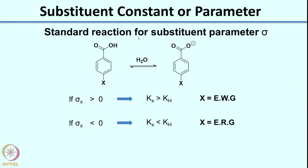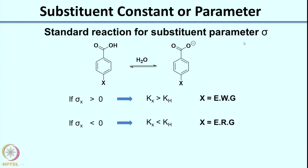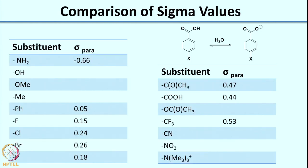If you look at any textbook on physical organic chemistry, you would find tables which give you the value of sigma for multiple substituents. These values are obtained for this benzoic acid reaction — this is the standard reaction for obtaining the substituent parameter sigma, not any other reaction. Let us now look at the magnitude of some of these values so that you get a feel for how these sigma values vary.